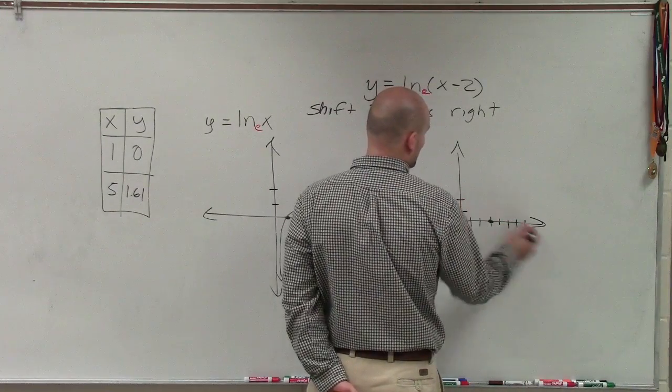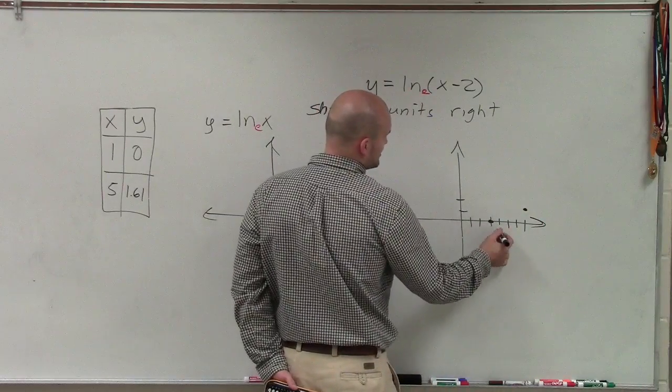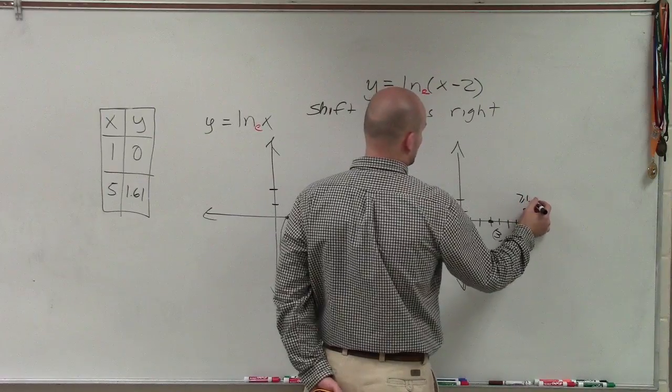And then 1.61, which would be over there. So I like to plot these points. So just write them out there, 3 comma 0, and then 7 comma 1.61.